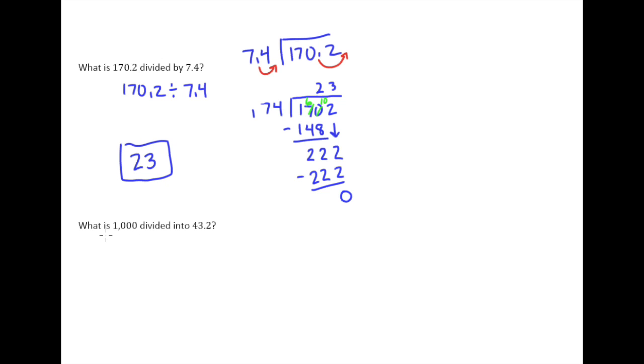The next one says, what is 1,000 divided into 43.2? Remember this tricky change in language here. Divided by and divided into give you two very different problems. So when you say divide it into, that means you're taking 43.2 and dividing it by 1,000. You've got to flip-flop that order.